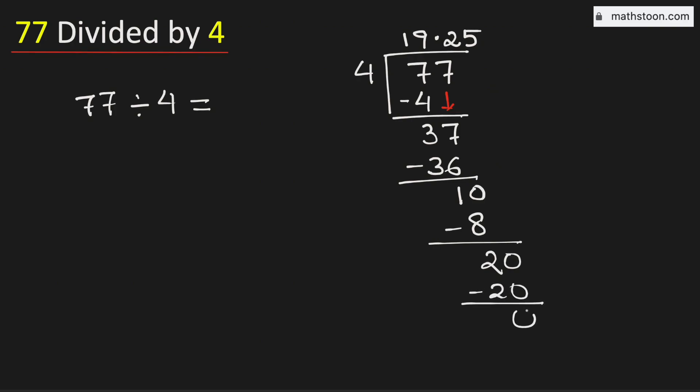Subtract, we get 0. As we have obtained the number 0, so we will stop. Therefore, 77 divided by 4 is equal to 19.25.